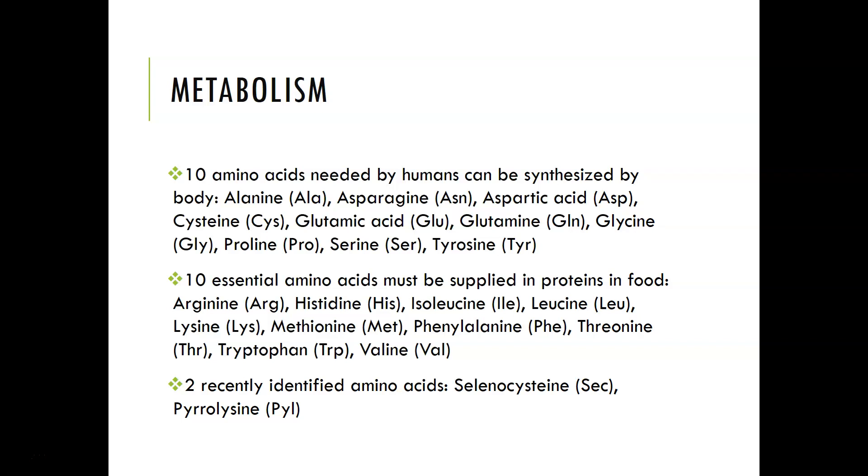Then there are 10 amino acids that are essential, which means you have to have them as part of your diet. Obviously, since amino acids come from proteins, they're supplied from proteins in your food. Those are arginine, histidine, isoleucine, leucine, lysine, methionine, phenylalanine, threonine, tryptophan, and valine. There were two recently identified amino acids, selenocysteine and pyrrolysine.